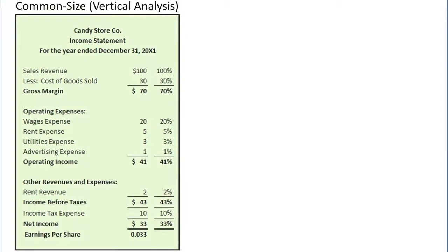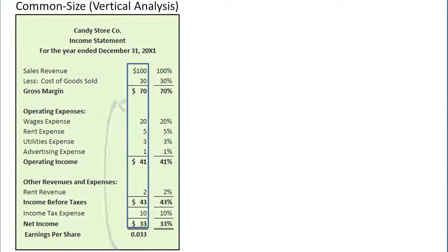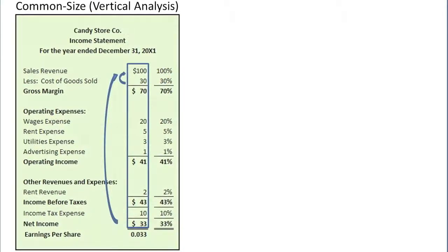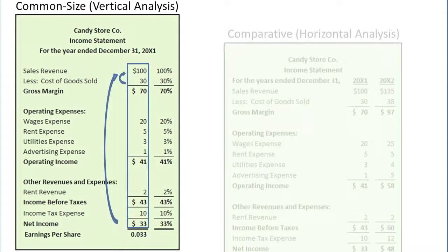For example, the common size income statement enables the user to perform a vertical analysis of all items on the income statement in relation to sales revenue. It is called a vertical analysis because numbers in the same vertical column are compared to another number — sales revenue — in the same column, to compute a ratio such as gross margin divided by sales revenue equals gross margin ratio. The gross margin ratio, also known as the gross profit ratio, comes from the math involved in a vertical analysis.